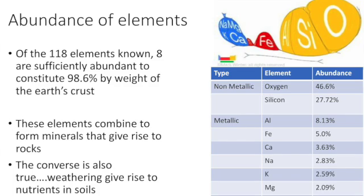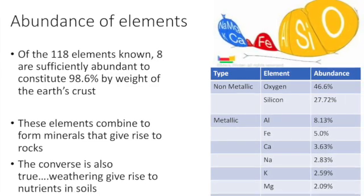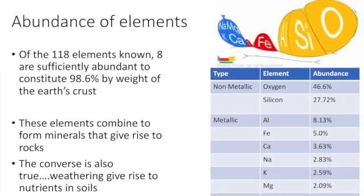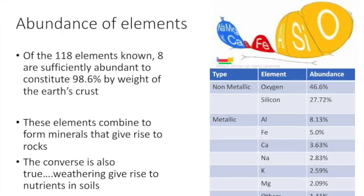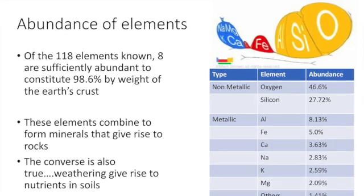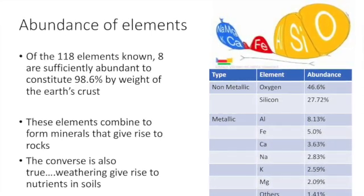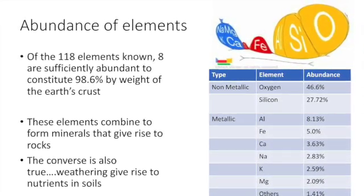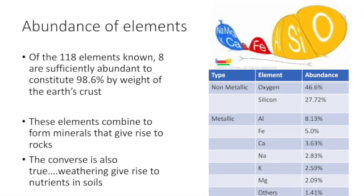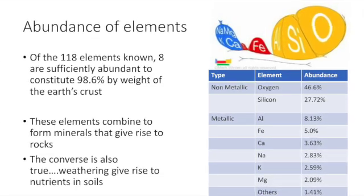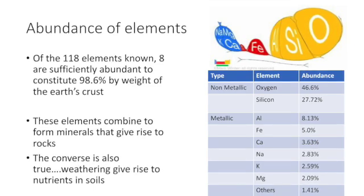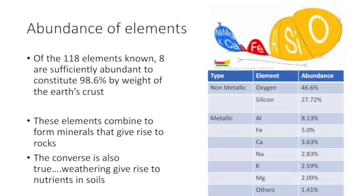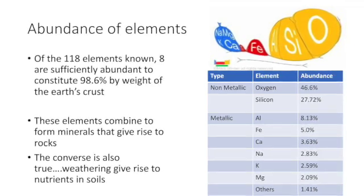These eight elements include oxygen, silicon, aluminium, iron, calcium, sodium, potassium and magnesium. These elements combine to form minerals that give rise to rocks, and the converse is also true. Oxygen and silicon together make up three-fourths of the earth's crust, and it is no wonder that they constitute more than 90% of the minerals on the earth's crust.